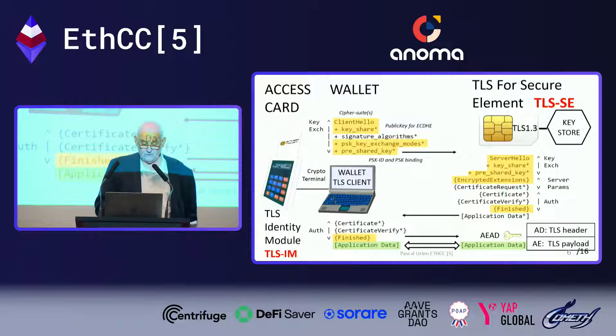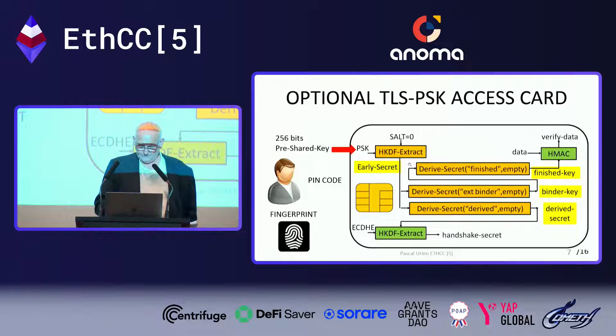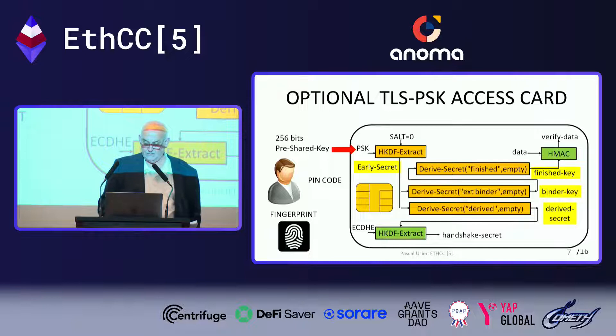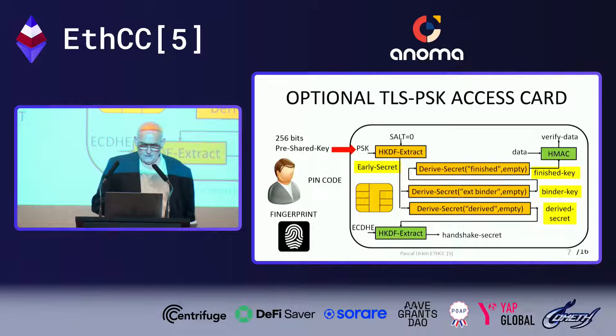Here is an illustration of the optional TLS pre-shared key access card. According to TLS, you have two procedures, colored in green, that use the pre-shared key to authenticate the user. In this illustration, these procedures are securely computed in the access card. The user is protected by dual-factor authentication, either using a PIN code or a fingerprint to unlock the use of these procedures.